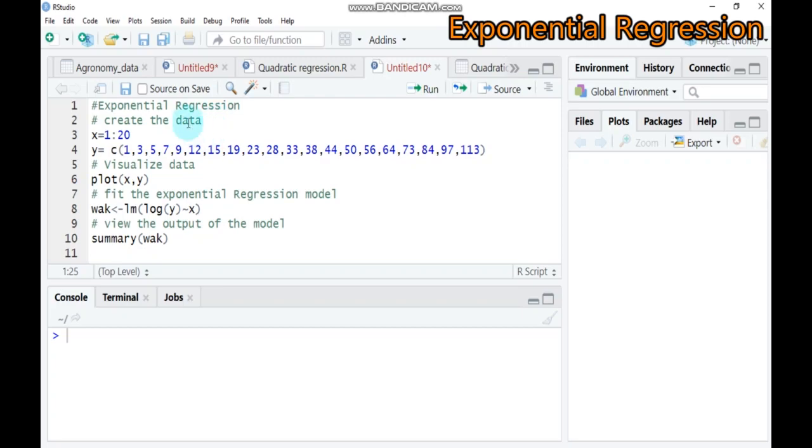This tutorial will show you how to perform exponential regression. The equation of an exponential regression model is y equals a times b to the power of x, where y is the response variable and x is the predicted variable, while a and b are the regression coefficients that describe the relationship between x and y.